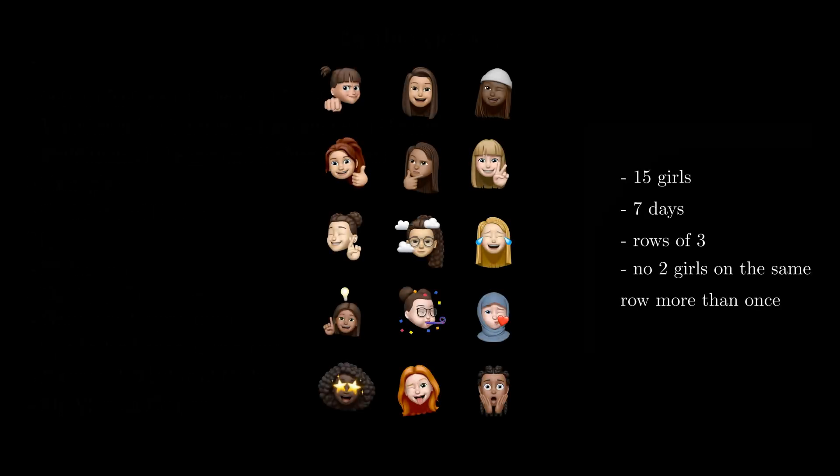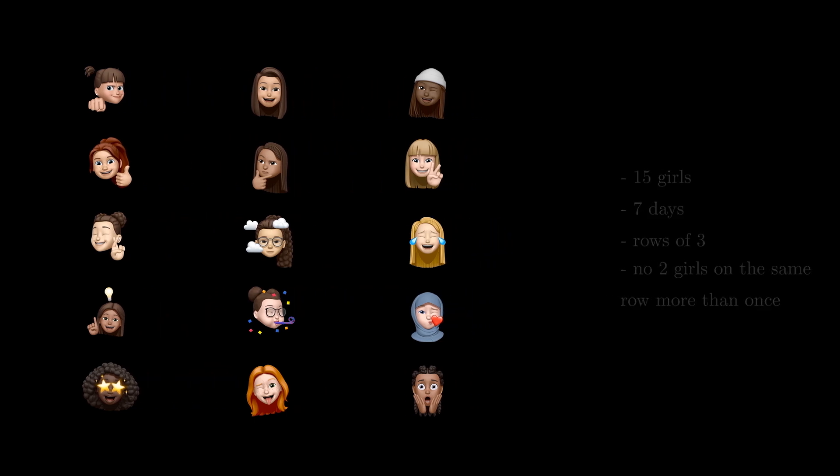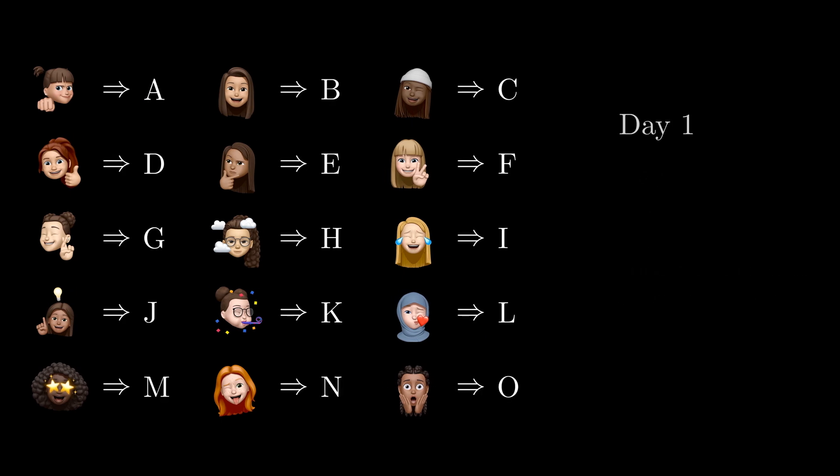Back to Kirkman's schoolgirl problem now. It turns out that arranging them is indeed possible. To keep it simple, we will assign each girl a letter. With a new notation, this is the arrangement for day 1.